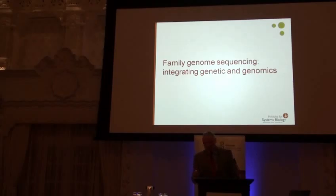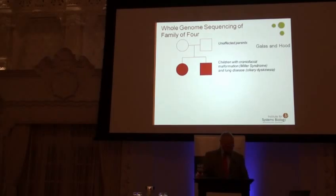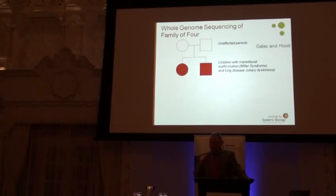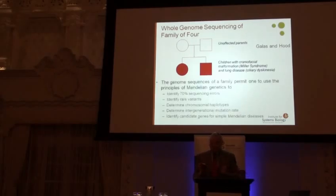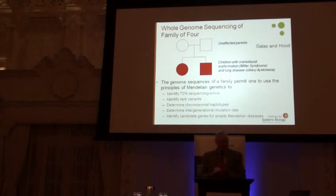We began studies a little more than a year ago analyzing family genome sequences, done by Complete Genomics. The first family had two normal parents and two children each with the same two genetic diseases. The question was whether family genome sequencing could identify candidate disease genes. Number one, using principles of Mendelian genetics within family sequences, we could correct 70% of sequencing errors — and with a family of six, close to 90%.